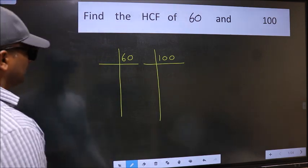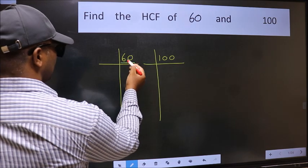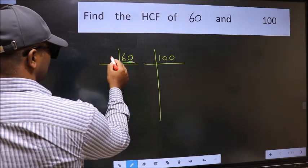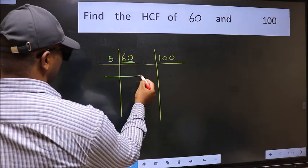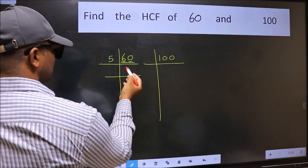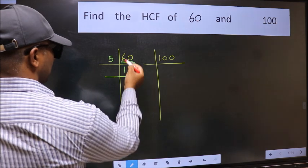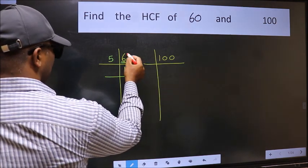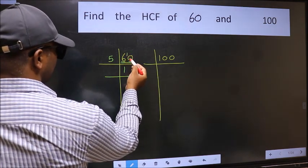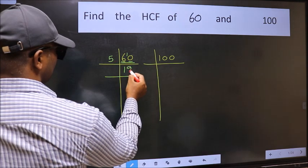Next, in this number, the last digit is 0, so I take 5. The first number is 6. A number close to 6 in the 5 table is 5 once 5. 6 minus 5 is 1, 1 carried forward is 10. When do we get 10 in the 5 table? 5 times 2 is 10.